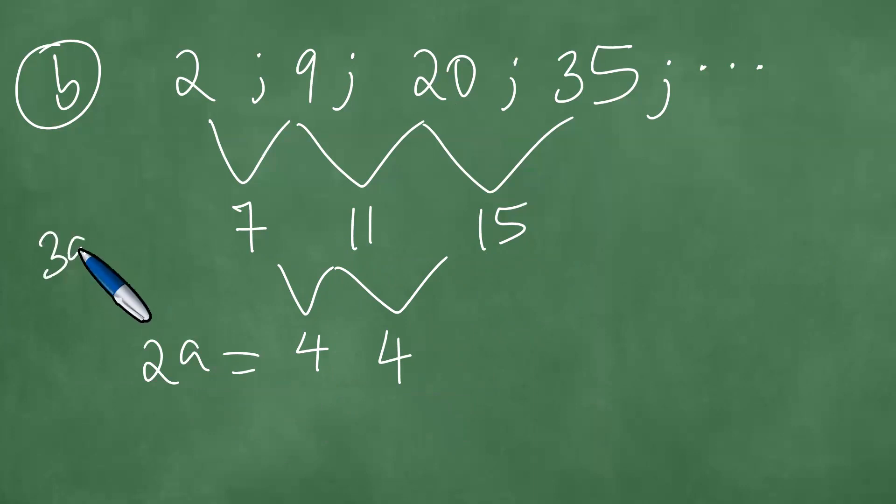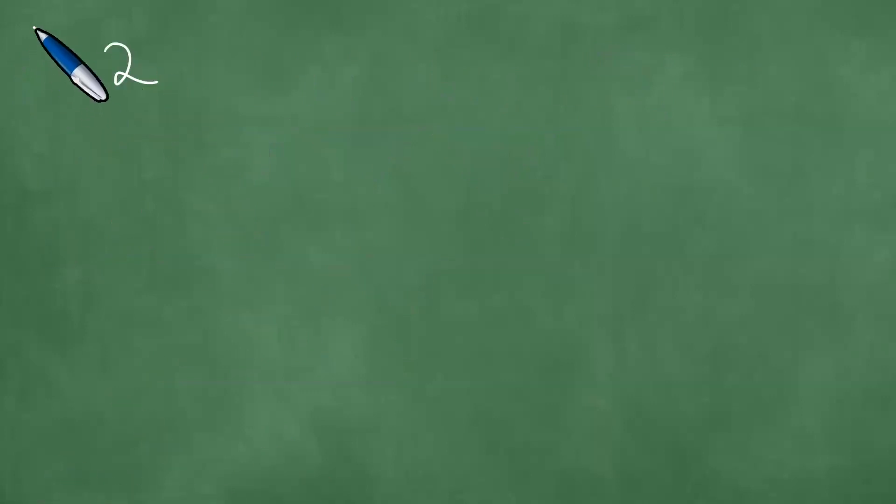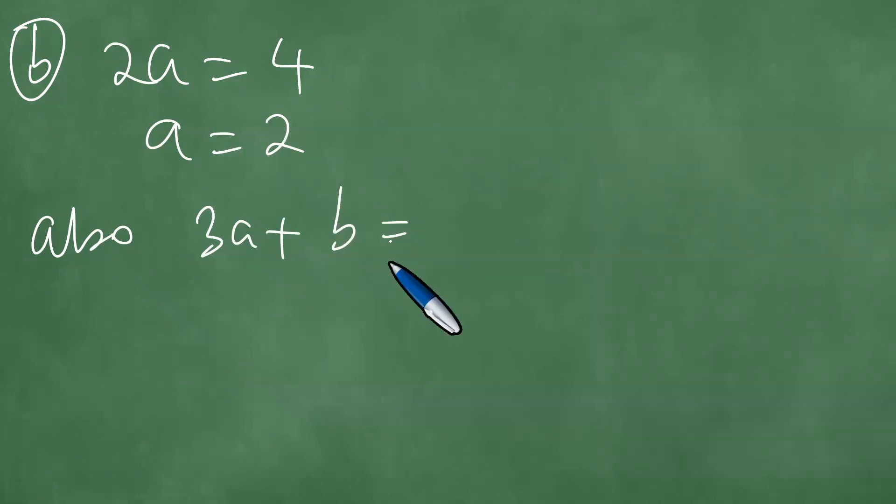So 2a equals 4, 3a plus b equals 7, and a plus b plus c equals 2. If this is the case, we then say 2a equals 4. Dividing by 2, we get a equals 2. Also, we have 3a plus b equals 7, so that we have 3 times 2 plus b equals 7, which means 6 plus b equals 7, which means b equals 1.